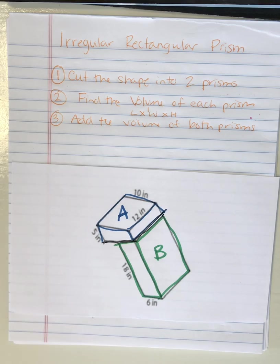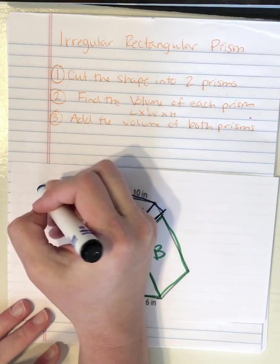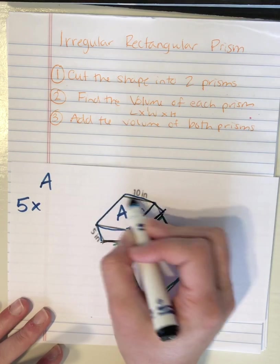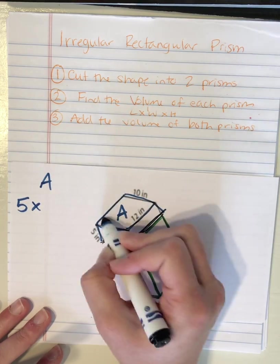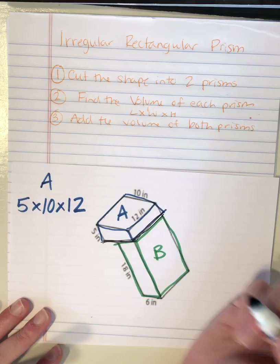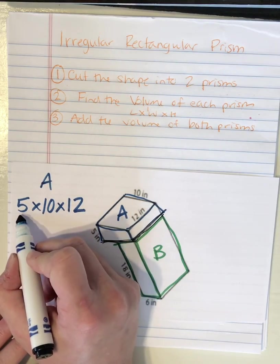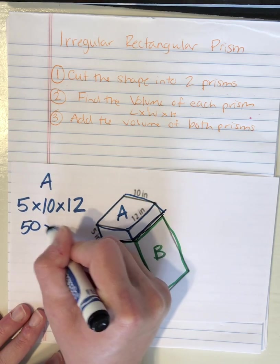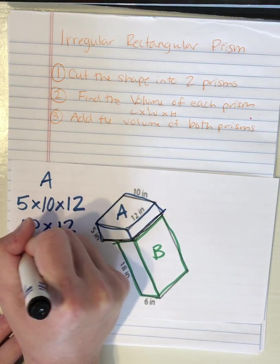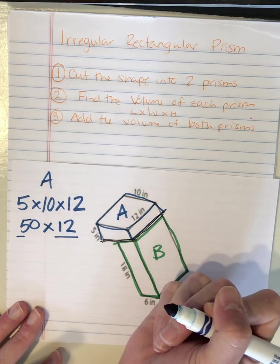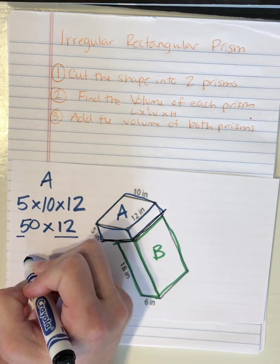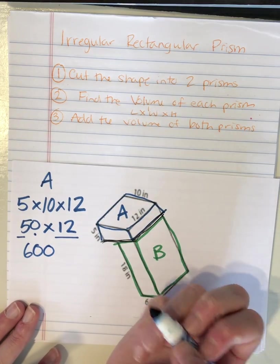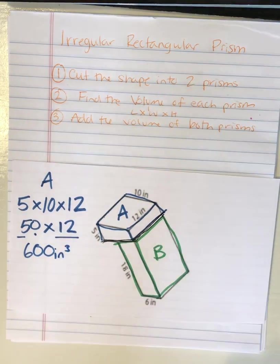So let's start with the volume of A. I see 5 inches times 10 and 12. Let's do 5 times 10 is 50. 50 times 12. Well, 5 times 12 is 60. I see my zero. I add my zero. We're working with inches. So it's cubic inches.